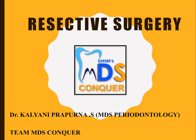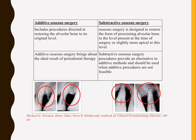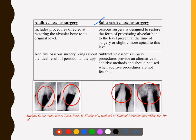Today we will be talking about resective surgery. Resective surgery is also called subtractive surgery, meaning you are trying to cut or delete certain things from the architecture of the bone. Additive procedures — such as reconstructive and regenerative procedures — try to add. Subtractive means you are trying to remove.